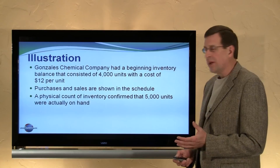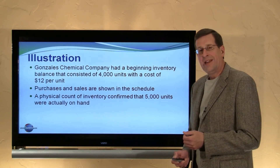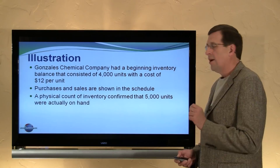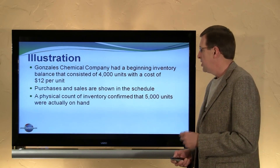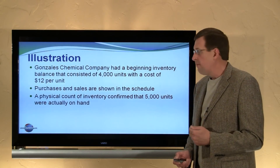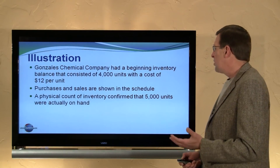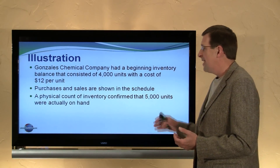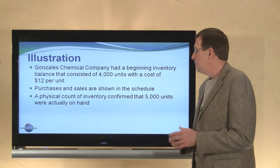In this example, Gonzales Chemical Company had a beginning inventory balance that consisted of 4,000 units with a unit cost of $12 each. During the period, we had a number of purchases and sales. A physical count of inventory confirmed that 5,000 units were actually on hand at the end of the period.